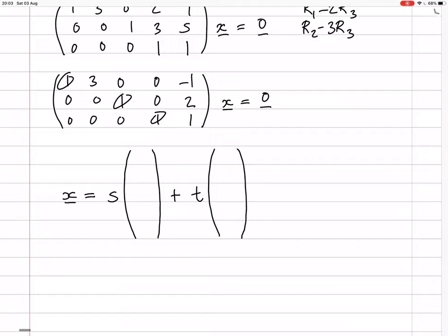The free variable columns are 2 and 5. For s, column 2, we have 1, 0. For t, column 5, we have 0, 1. Working from the bottom up, we get minus 1, minus 2, 1, and then 0, 0, minus 3.